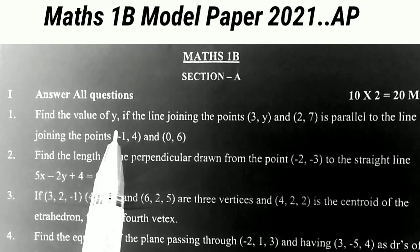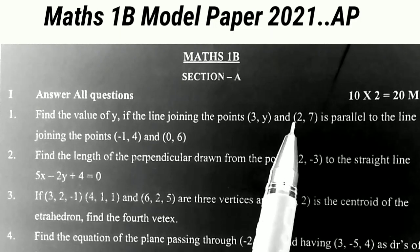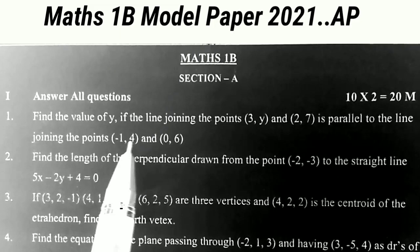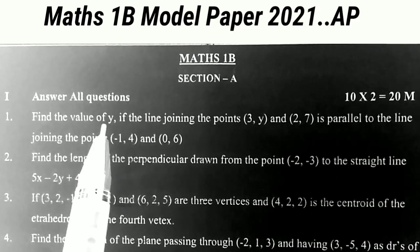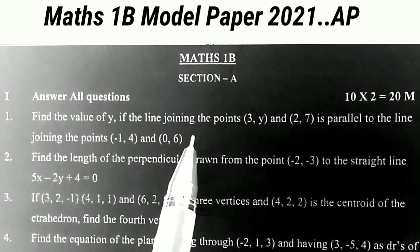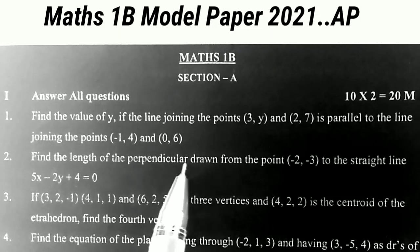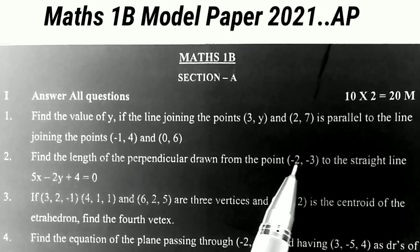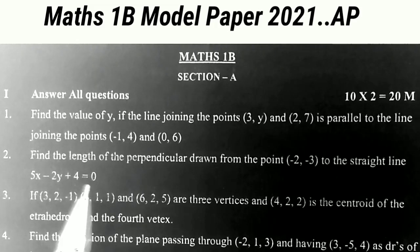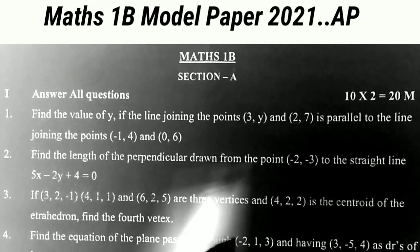The first question: find the value of y if the line joining the points (3, y) and (2, 7) is parallel to the line joining the points (-1, 4) and (0, 6). This is the most important sum from straight lines. The next one: find the length of the perpendicular drawn from the point (-2, -3) to the straight line 5x minus 2y plus 4 equals 0. This is also a very important maths problem from straight lines.